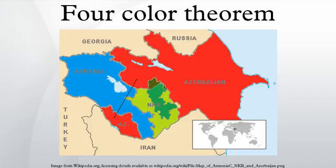History and early proof attempts: the problem was mentioned in lectures as early as 1840. The conjecture was first proposed on October 23, 1852, when Francis Guthrie, while trying to color the map of counties of England, noticed that only four different colors were needed. At the time, Guthrie's brother Frederick was a student of Augustus de Morgan at University College London. Francis inquired with Frederick regarding it, who then took it to de Morgan.